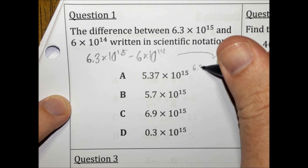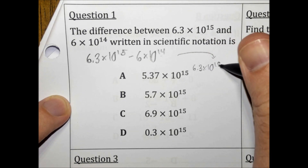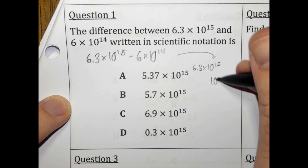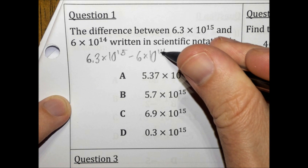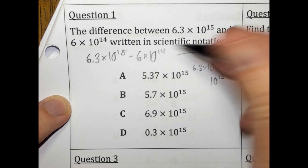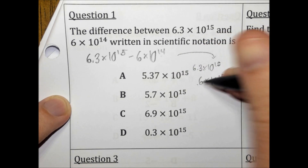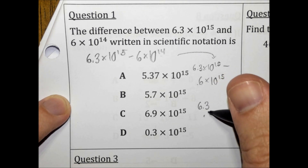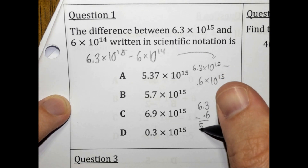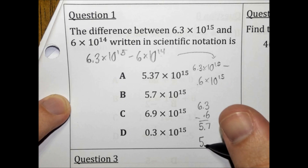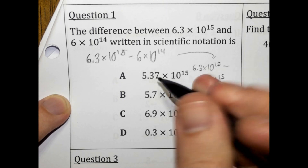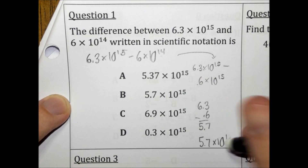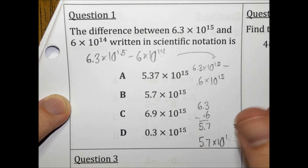We're not going to change 6.3 times 10 to the 15th. We are going to change 6 times 10 to the 14th to be 10 to the 15th. When you change the exponent to be higher, you make the number out front smaller. So we subtract: 6.3 minus 0.6 is 5.7. The answer is 5.7 times 10 to the 15th, which is choice B.